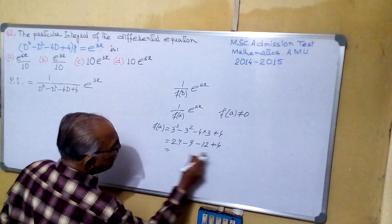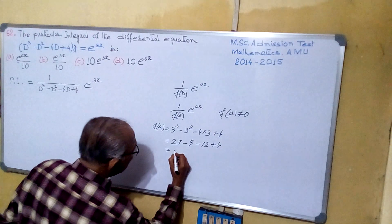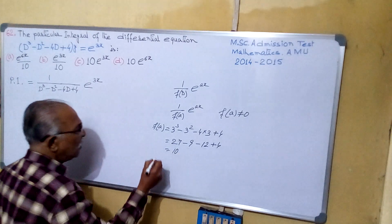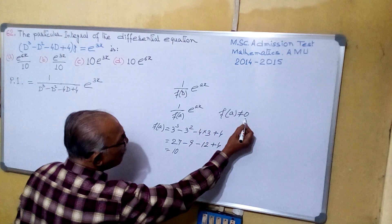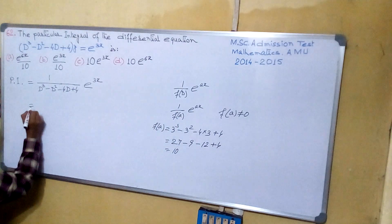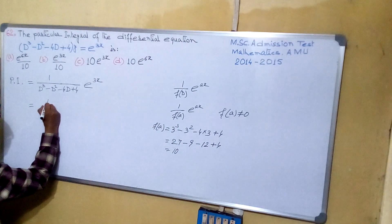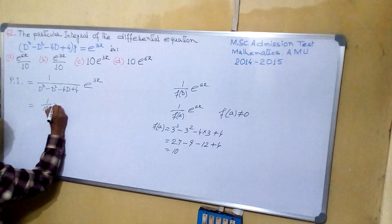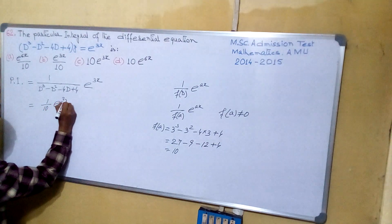31 minus 21, that is 10. So it is not equals to 0, so it will be 1 by f(a), that is 1 by 10 into e to the power 3x.